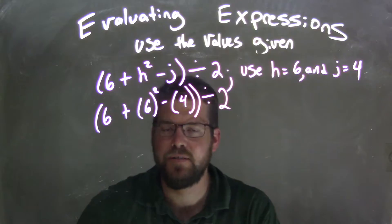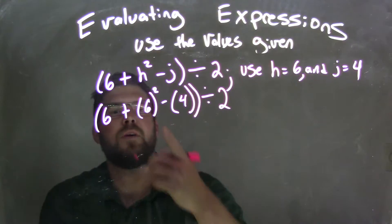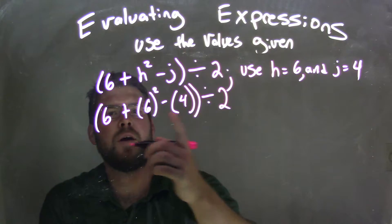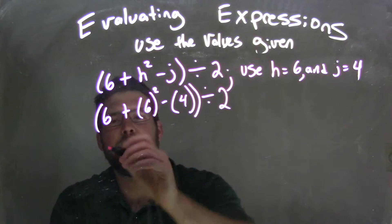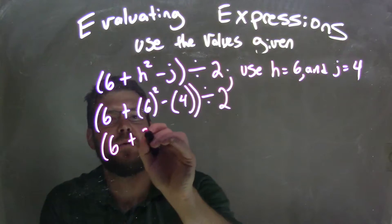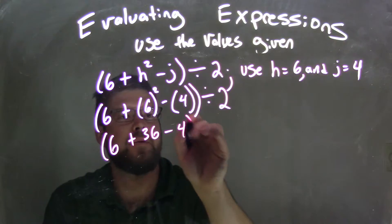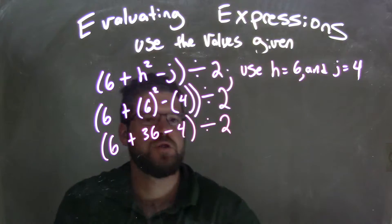There's a lot of parentheses and a lot of 6s here, so let's take our time. So we have 6 squared minus 4 here going on, and we have plus 6 out here. Exponents come first, so 6 squared comes out to be 36, so 6 plus 36 minus 4 divided by 2.